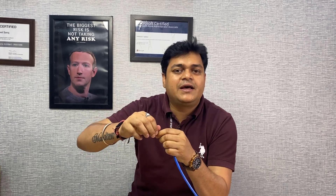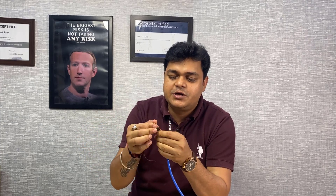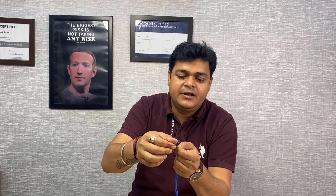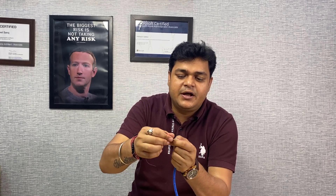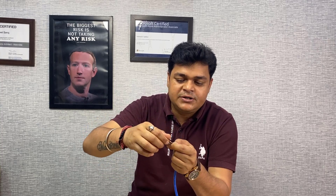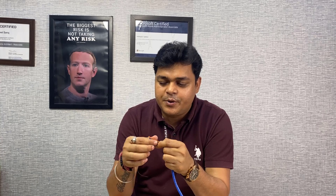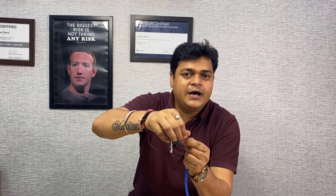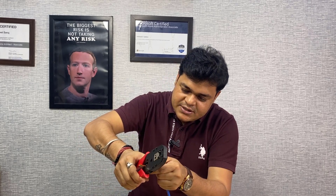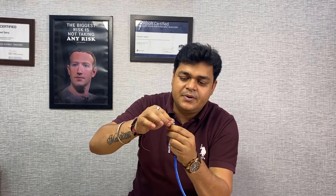These are all the color codes you need to use to create a straight-through cable. You just need to arrange these colors as per the cabling method we discussed: white-orange, orange, white-green, blue, white-blue, solid green, white-brown, brown. Once arranged, cut each and every cable in proper shape so they are even.